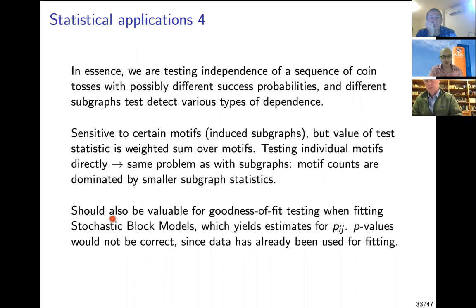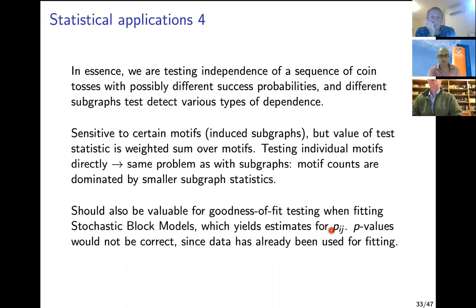The centered subgraph statistics are weighted sums of motifs with weights chosen so that the statistics are uncorrelated. Typically you don't have the probabilities pij given to you a priori, but you can fit a stochastic block model — assigning vertices to communities and estimating within- and across-community probabilities — to get estimates. If using the data for fitting, you must adjust p-values accordingly, but these statistics serve as a sanity check for residual dependence after model fitting.